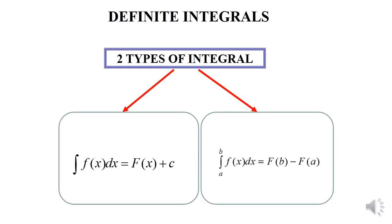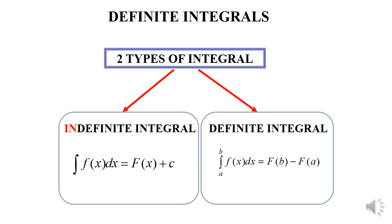There are two types of integrals. The first is called the Indefinite Integral and the second is called the Definite Integral. The difference between them is that for the Definite Integral, it has an interval: A, also known as the Lower Limit, and B, called the Upper Limit. For the Indefinite Integral, there is no interval.